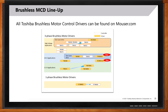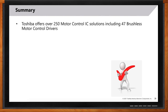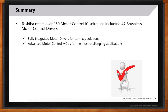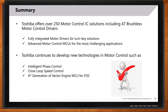To summarize: Toshiba offers over 250 motor control IC solutions, including 47 brushless motor control drivers and many Vector Engine MCUs. The motor control drivers are mostly fully integrated and great for turnkey solutions, really simplifying the task for designers. For those who need very complex motion control, flexible high power, and mission-critical applications, the Vector Engine MCU addresses those challenging applications. Toshiba continues to invest in and develop new technologies including intelligent phase control, closed-loop speed control, and now the fourth generation of Vector Engine for FOC applications.